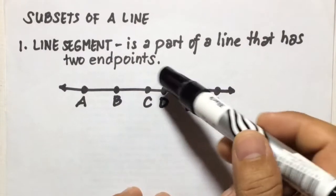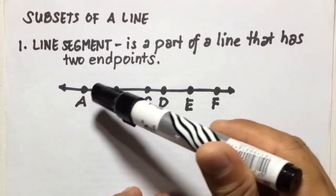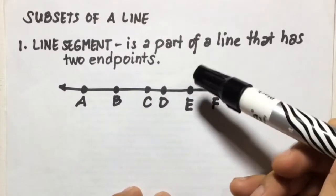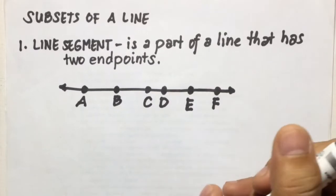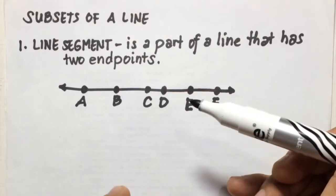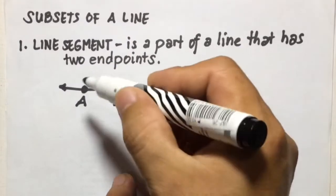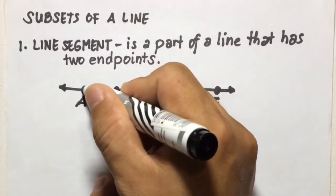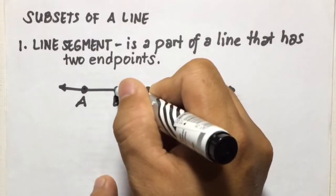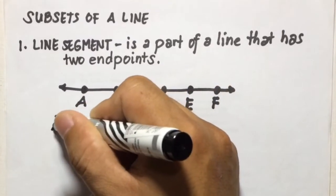So if we have here a line composed of points A, B, C, D, E, and F, we can name many line segments from it. For example, we can name line segment AB, from this point to this point. So we name this one as line segment AB.